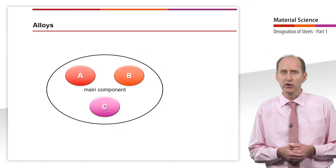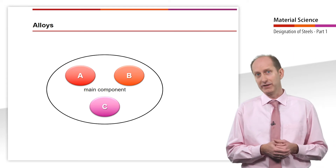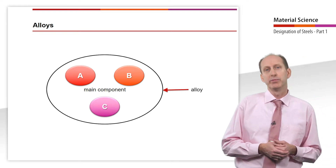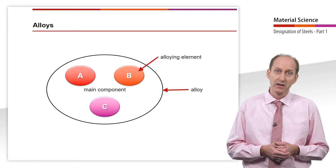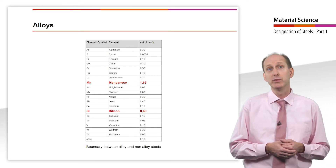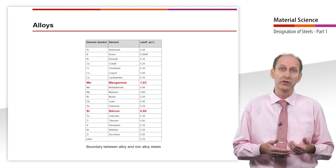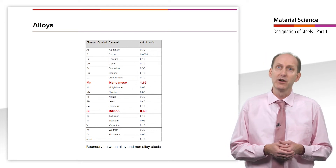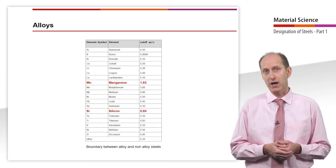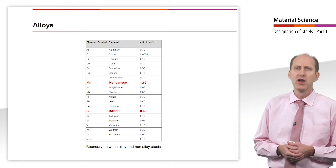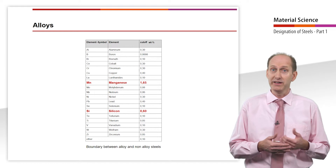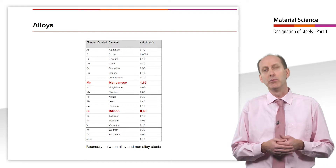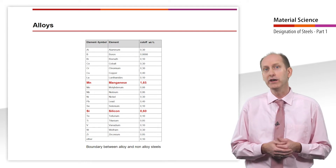A metallic material that consists of at least two different elements is called an alloy. The elements that are added to the main component are called alloying elements. In terms of alloying elements we distinguish between unalloyed steels — steels that only consist of iron and carbon — and alloyed steels, which contain at least one other element besides carbon. However, unalloyed steels also contain chemical elements which are either added intentionally or originate from added material and cannot be completely removed from the melt for technical or economical reasons.